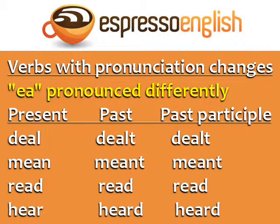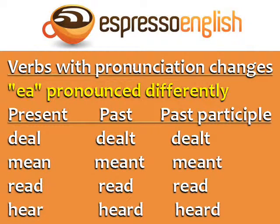Another group has EA pronounced differently from the present to the past and past participle. Deal, dealt, dealt. Mean, meant, meant. Read, read, read. Hear, heard, heard.